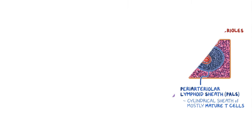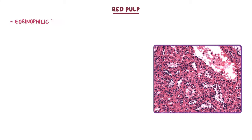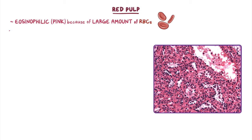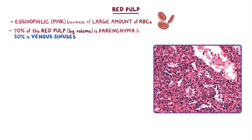Alright, now let's focus on the red pulp, which appears noticeably more eosinophilic, or pink, because of the large amount of red blood cells present. About 70% of the red pulp by volume is composed of the parenchyma, and about 30% consists of the venous sinuses, or sinusoids.